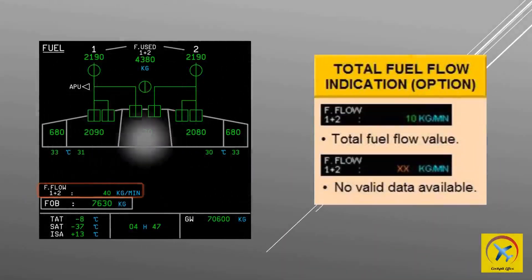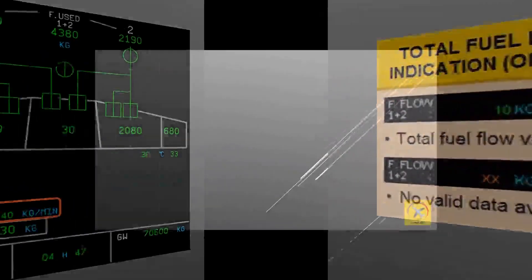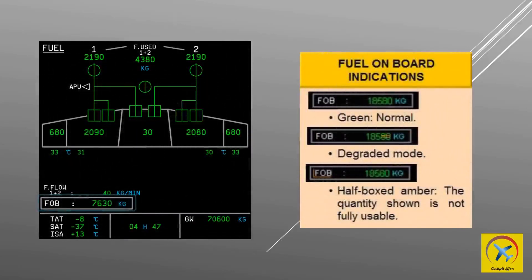Total fuel flow indication is an option. It shows fuel flow indication between the two engines, and if it shows amber crosses, no valid data is available. Fuel on board indications can be seen on the fuel display page. Green is the normal indication. When the last two digits are dashed, it shows integrated mode. A half-boxed amber shows the quantity of fuel which is not fully usable.